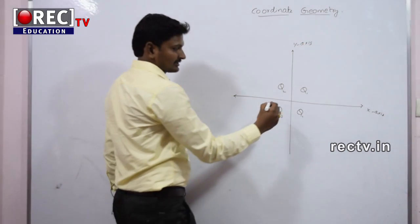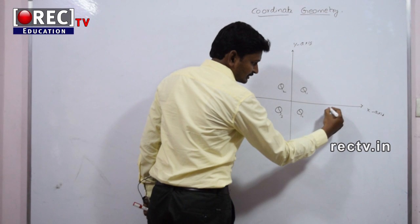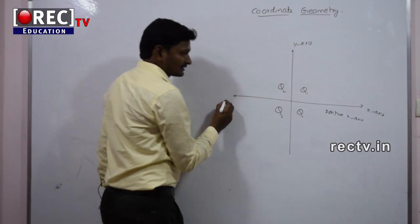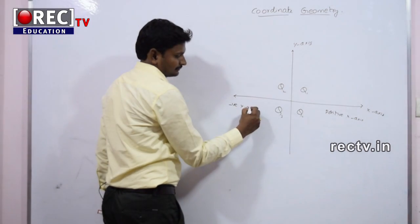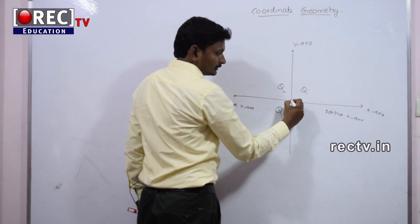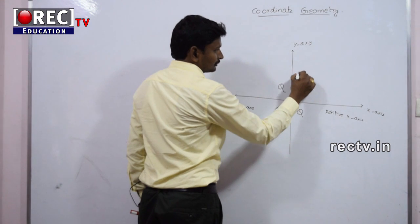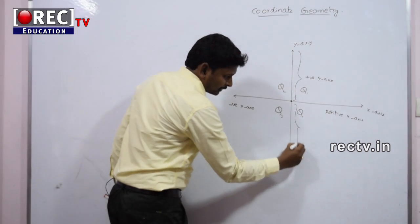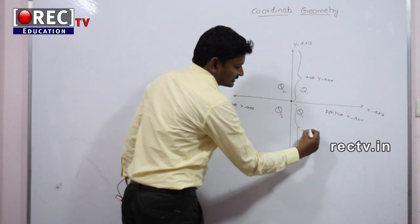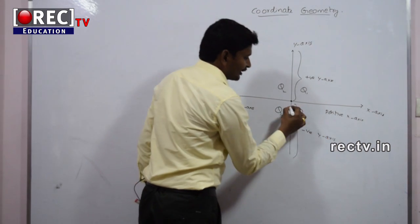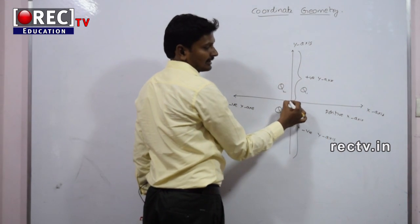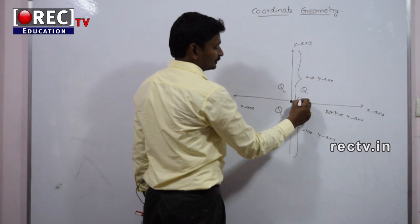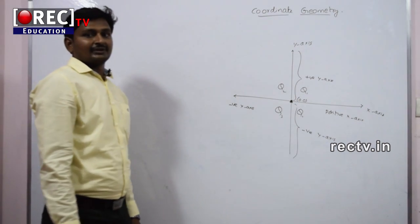The right hand side of the X axis represents the positive X axis, and the left hand side represents the negative X axis. The upside represents the positive Y axis, and the bottom side represents the negative Y axis. The point of intersection of the X axis and Y axis is the origin, which we take as (0, 0) — that is the point of intersection of the two axes.